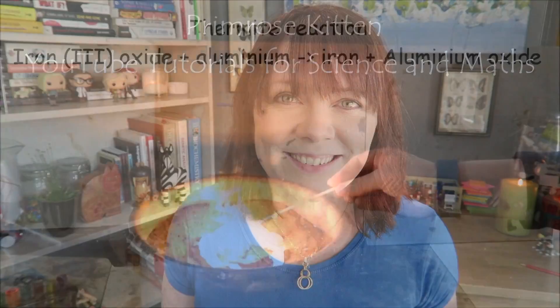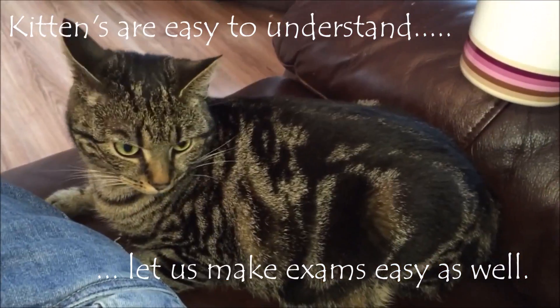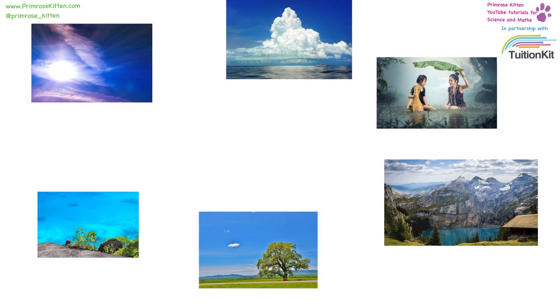Hey guys, in this video we're going to be looking at a description of the water cycle. The water cycle is much more complicated than you think it is going to be. Heat energy from the sun comes down, warms the surface of the water on the earth, and this is going to cause the water to evaporate.